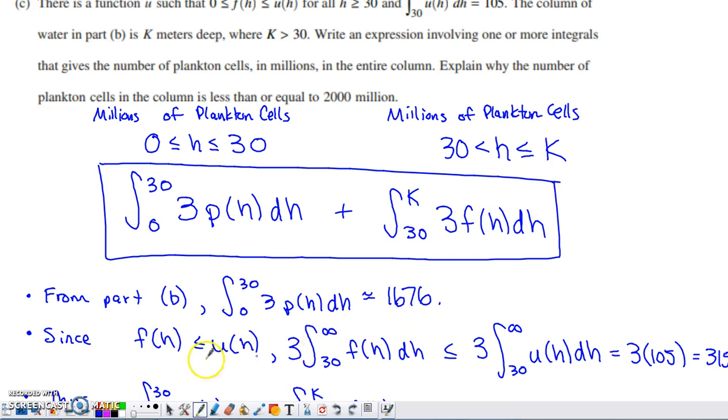Now they're telling us that the water actually goes a little bit beyond 30 meters in depth. They've also told us that f of h is less than or equal to u of h. So if I factor the 3 out of this integral right here, I can always factor constants out in front of definite integrals. They're linear operators, we're allowed to do that.